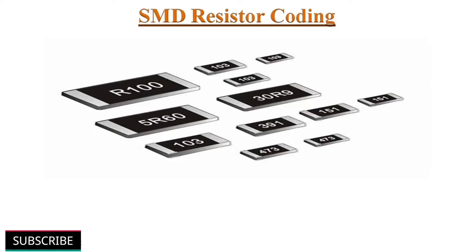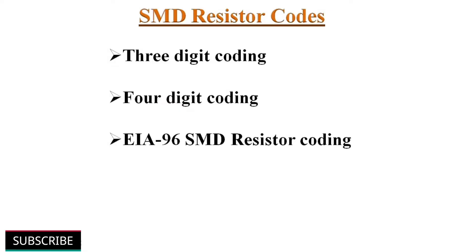Because of the small size of SMD resistors, there is no place for the traditional color band code to be printed on them. Therefore, new codes called SMD resistor codes were developed. The most commonly seen codes are 3-digit coding, 4-digit coding, and Electronic Industries Alliance EIA-96 SMD resistor coding. Let's discuss them one by one.